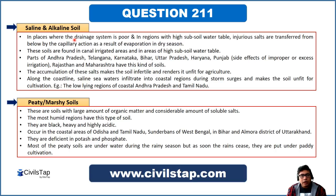Along the coastline, saline seawater infiltrates into coastal regions during storm surges and makes the soil unfit for cultivation. In India, coastal Andhra Pradesh and Tamil Nadu, which frequently experience tropical cyclones, are affected when seawater intrudes inland and leaves salts in the soil, rendering it saline and infertile.